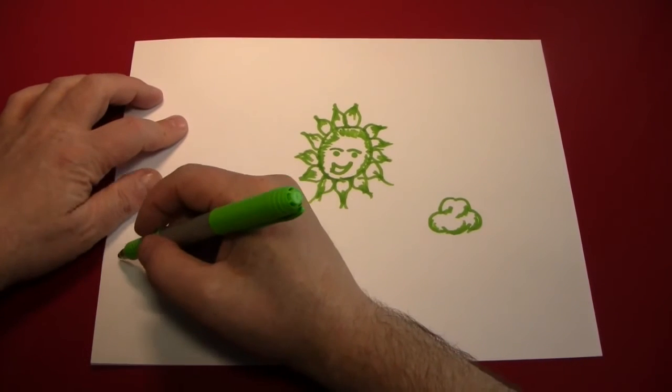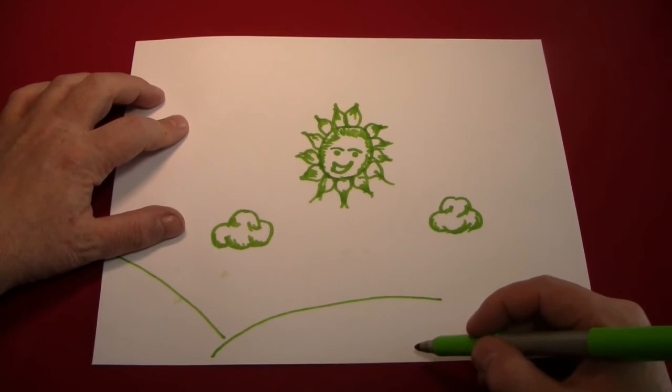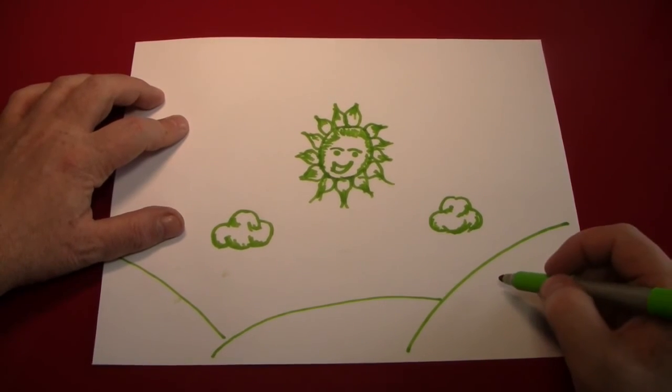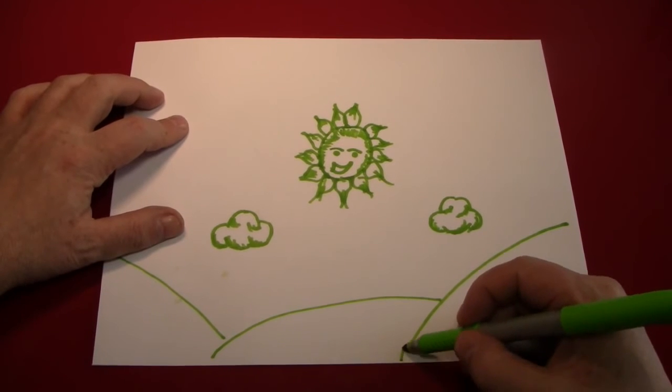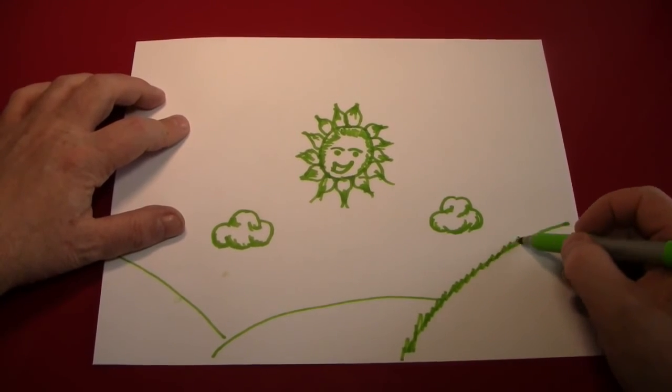Let's put some land, a couple of hills and stuff. Just some big curves like that. And we can texture these with our old friend the grass pattern.